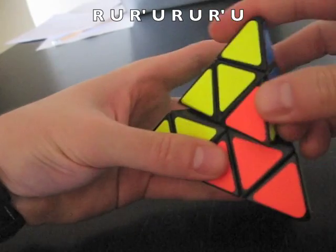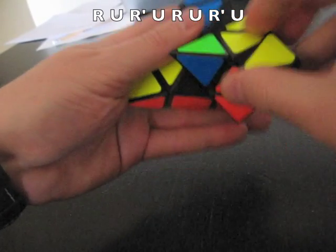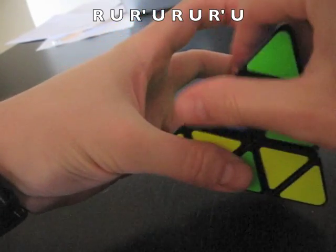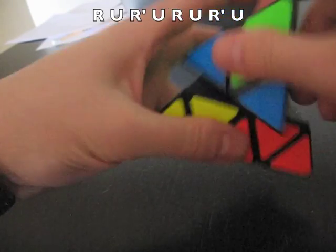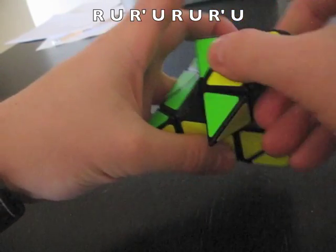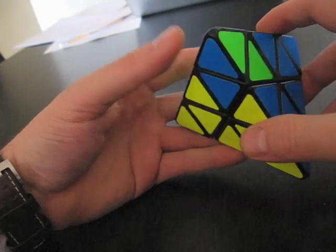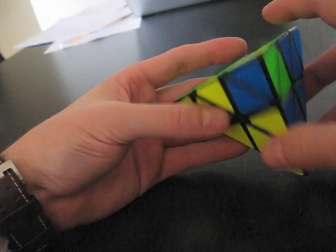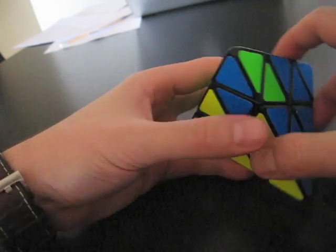We're going to need to rotate our corner clockwise. And how do we do it in the Pyraminx? Well, very simple. R, U, R', U, R', U. And that's it. Puzzle is correct, except for one twisted corner.